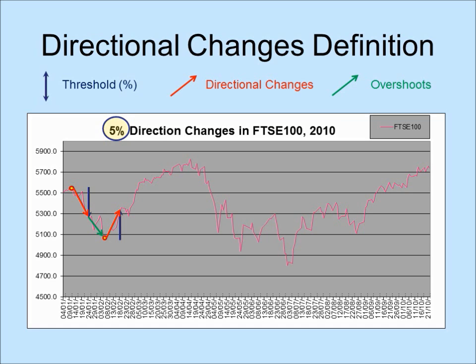A downturn directional change occurred here, after a long overshoot. This time the overshoot was extremely short before the next downturn directional change took place.